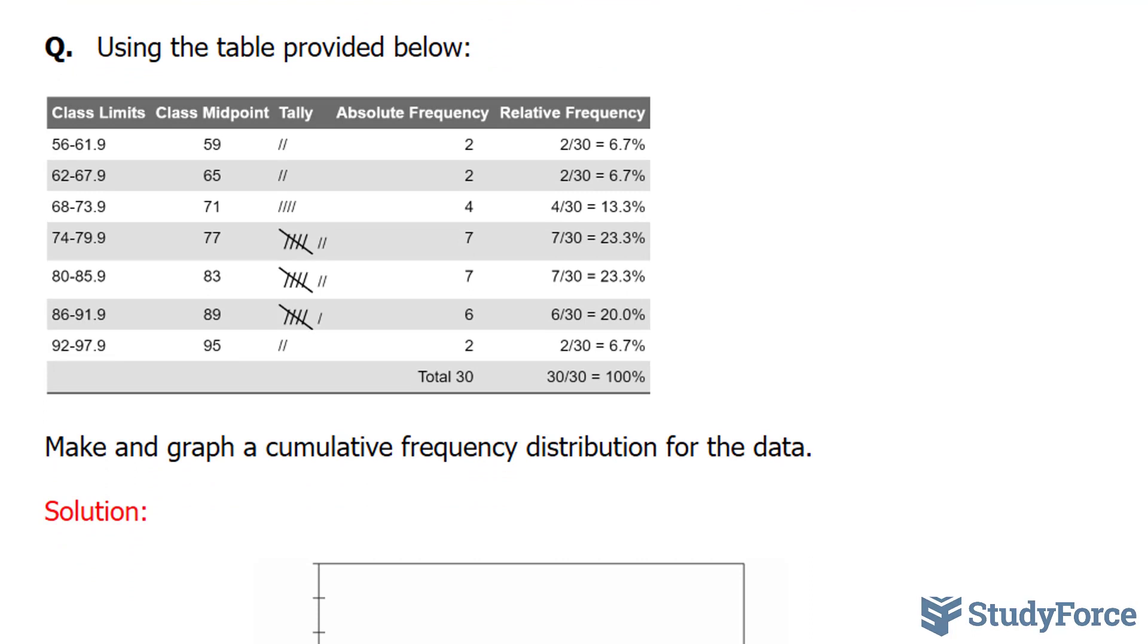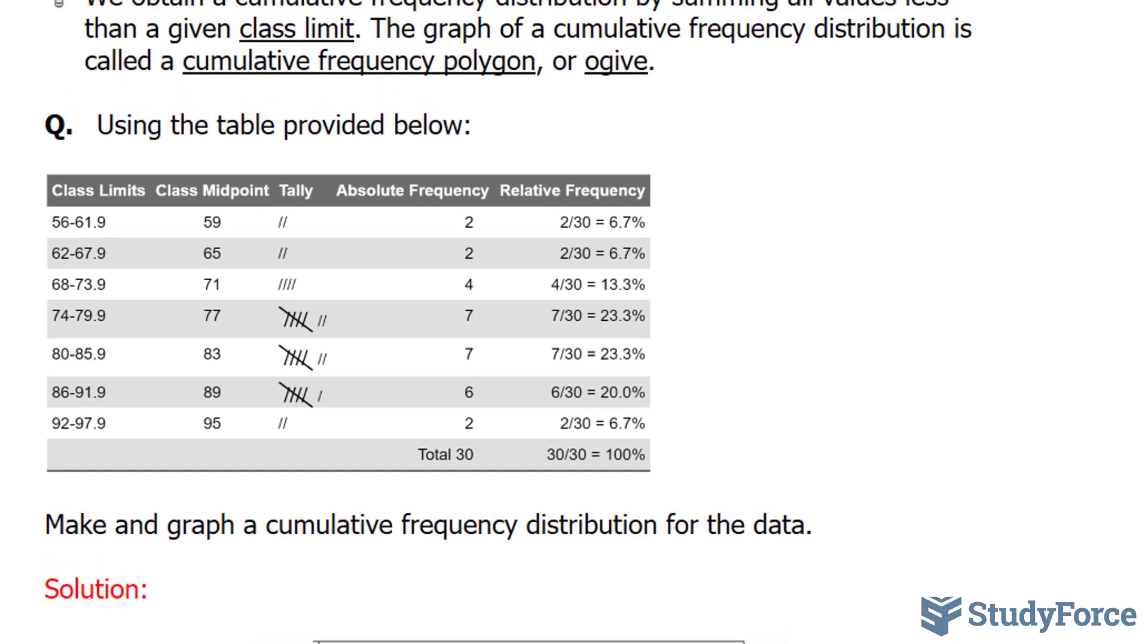To do this, we compute the frequencies by adding the values below the given limits, as shown. So for example, the classes we had were between 56 and 62, 62 to 68, all the way to 92 to 98. So we have to create a table where we tally up all numbers that are under 98, that are under 92, under 86, and so on. Let me show you what I mean.